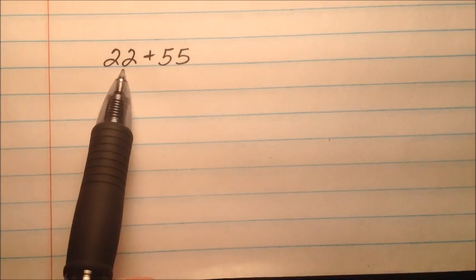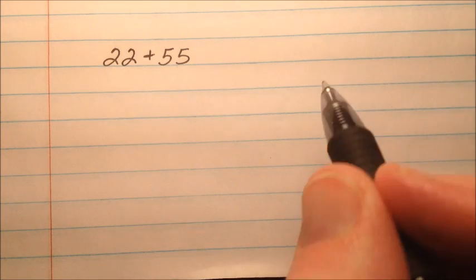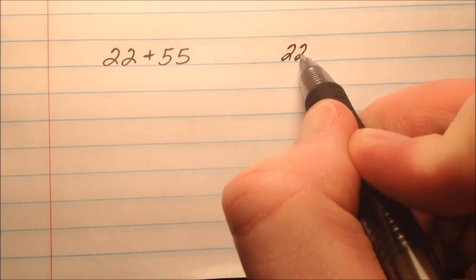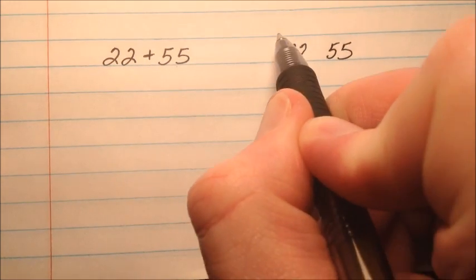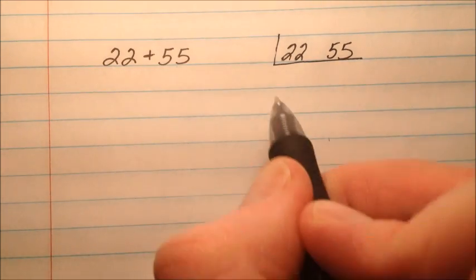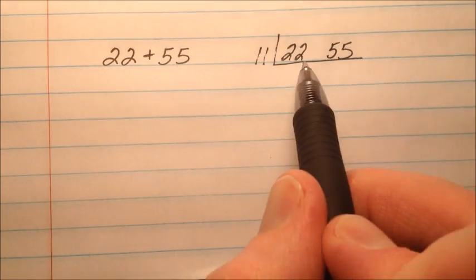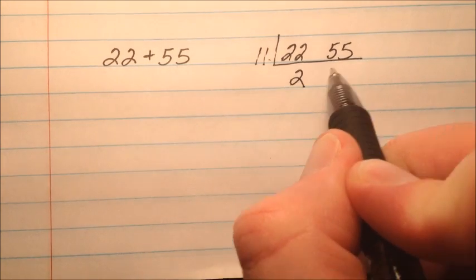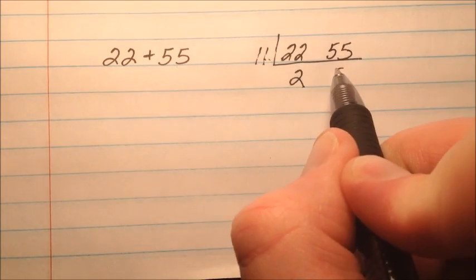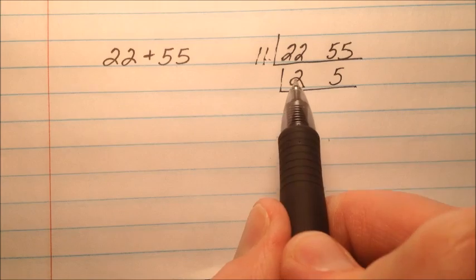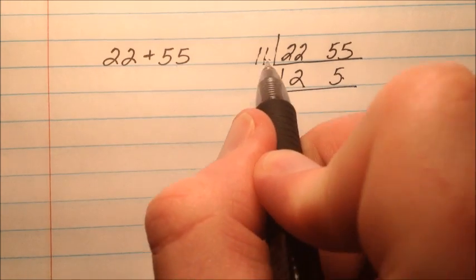In the next example, I have 22 plus 55. So I'm going to go ahead and put these numbers side by side and find the greatest common factor. It looks like 11 will divide nicely out of both of those numbers. So 22 divided by 11 is 2, 55 divided by 11 is 5, and 2 and 5 don't have any common factors, so I'm done.